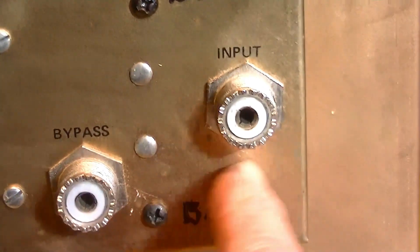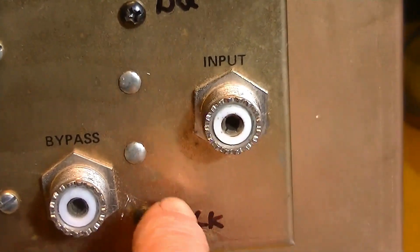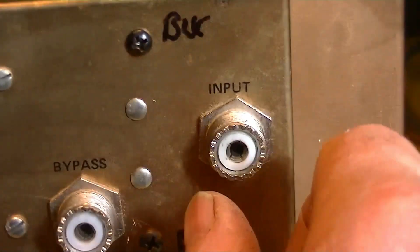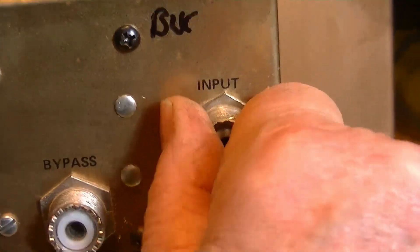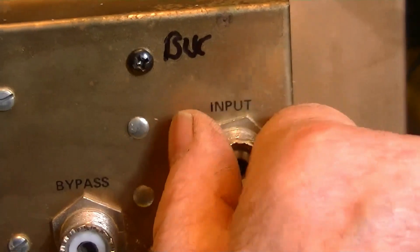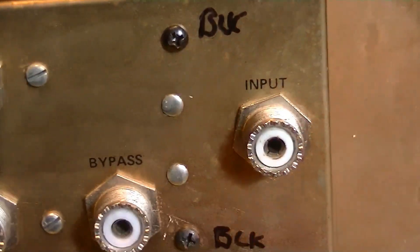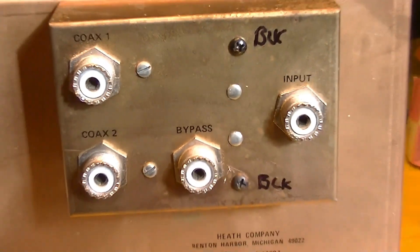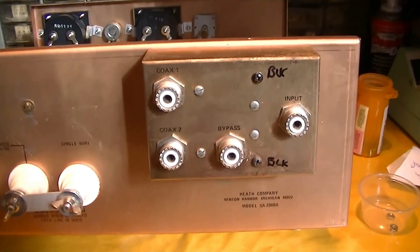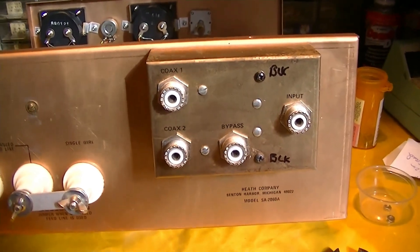But rather than having SO-239s with four little screws that screw it into the chassis, it has a lock nut. And the lock nut's on the inside. And so what I have to do now is remove this whole switch assembly in order to get it tight.